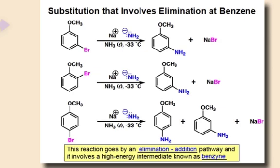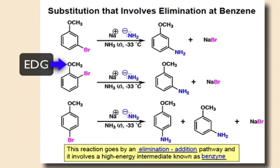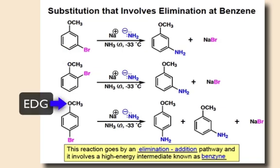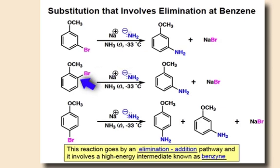The first thing to notice in this reaction is that it doesn't have electron-withdrawing groups on the ring, as we had seen in the last webcast. Another interesting aspect of this substitution reaction is that the incoming nucleophile does not always end up on the carbon that bears the leaving group. As always, this requires some mechanistic insight to understand the formation of the observed products.